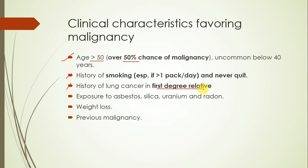If there is a family history of cancer in first-degree relatives such as a brother, father, or mother, that increases the risk further. Exposure to carcinogenic substances such as asbestos, silica, uranium, or radon also increases the chance of malignancy. Obviously, someone with active malignancy would have weight loss, and a history of past malignancy could suggest a new malignancy or a metastasis.